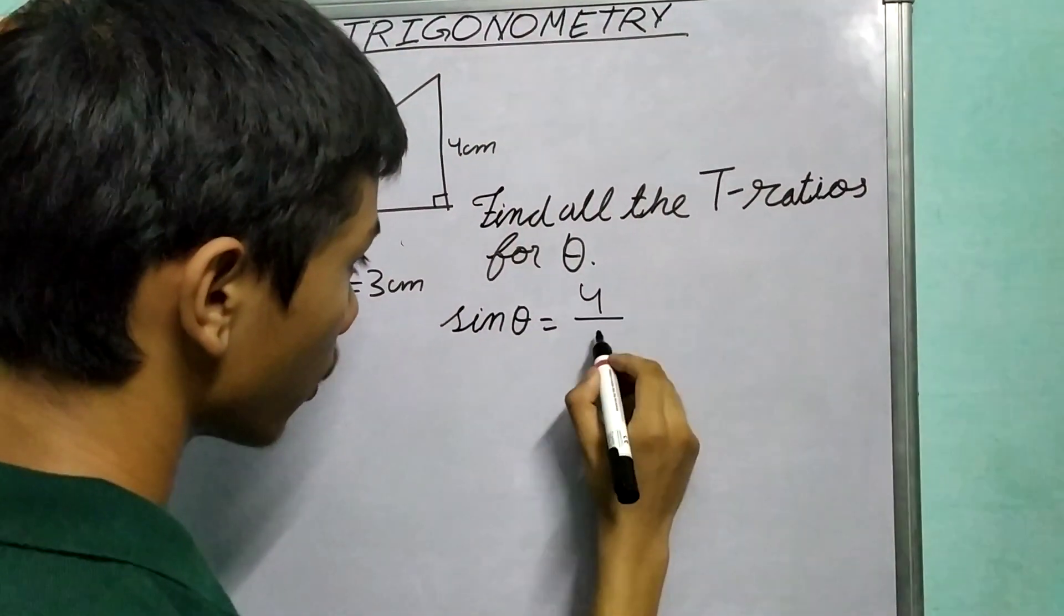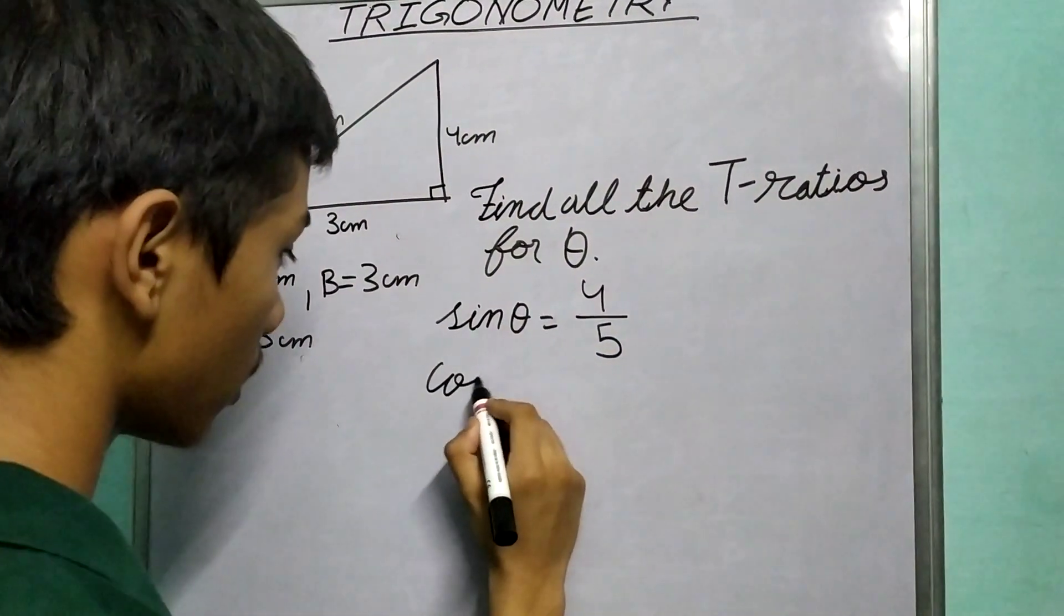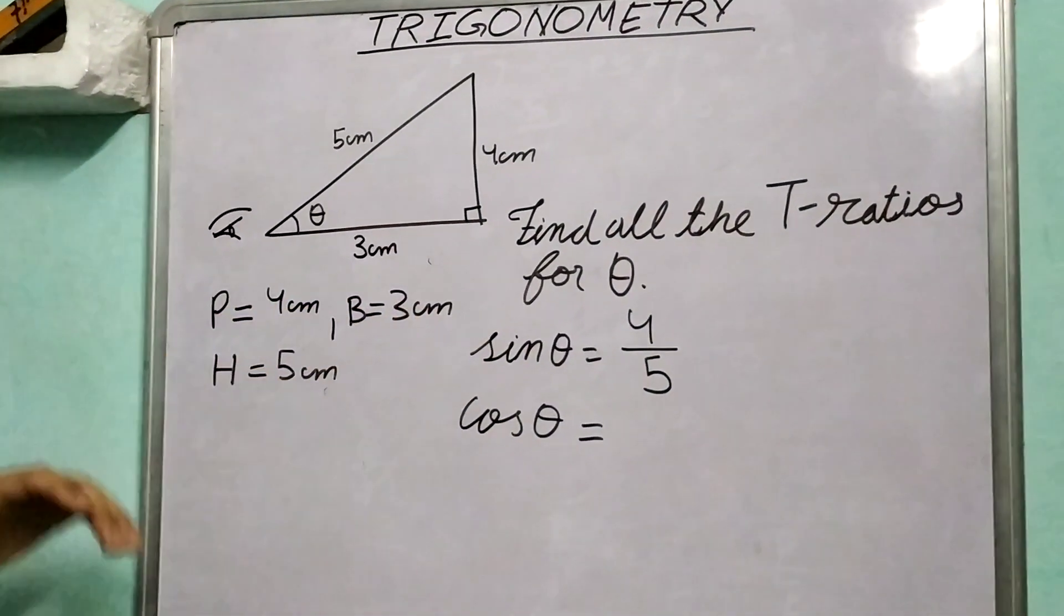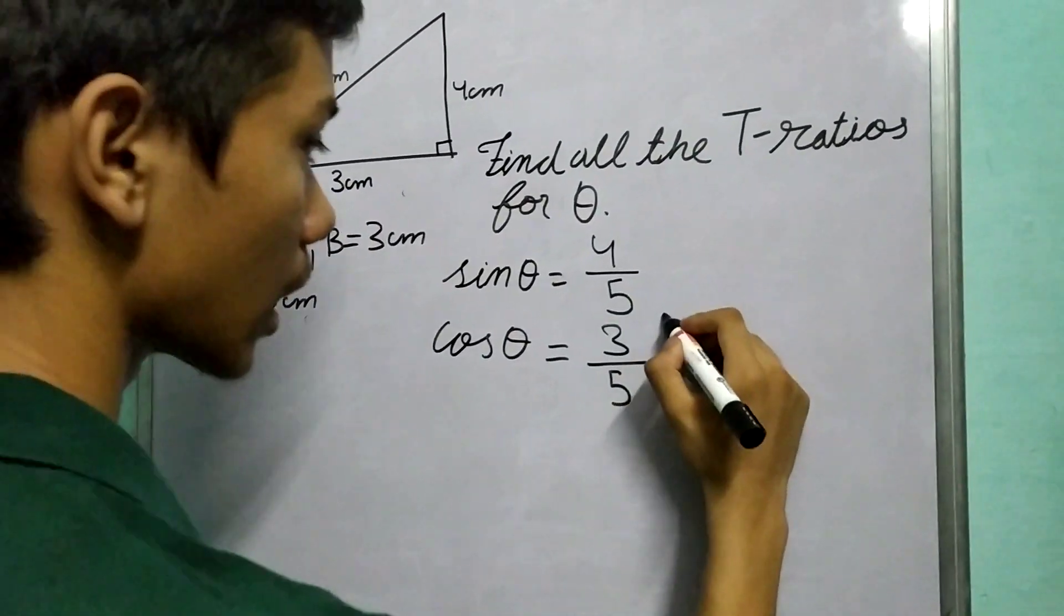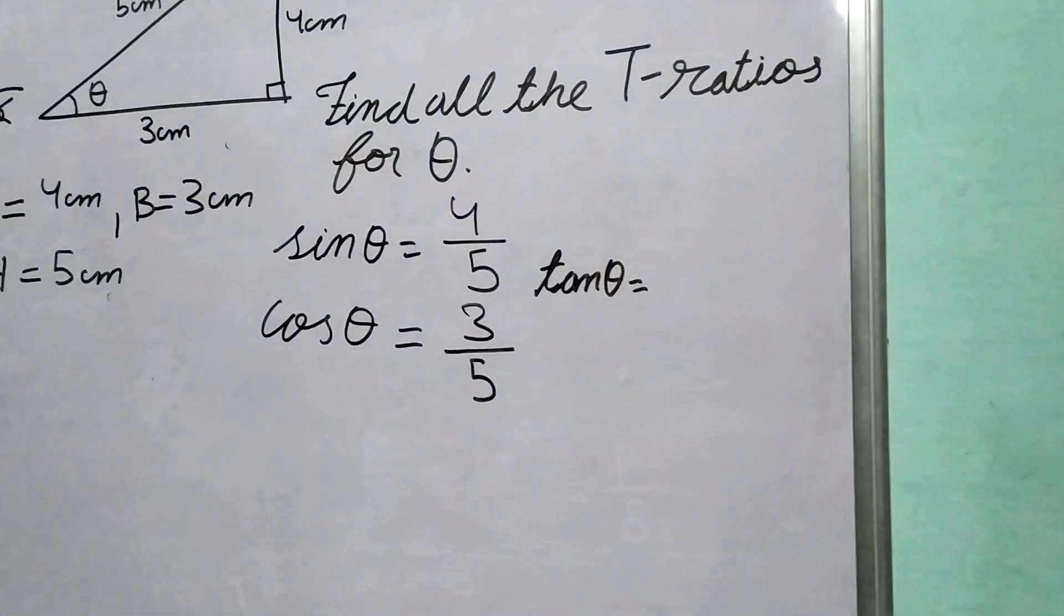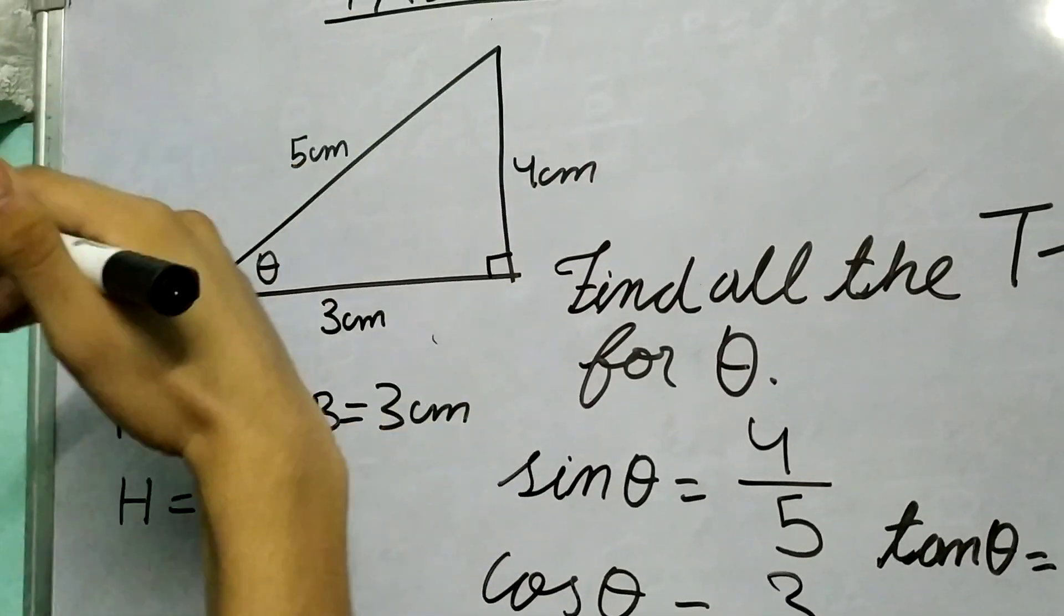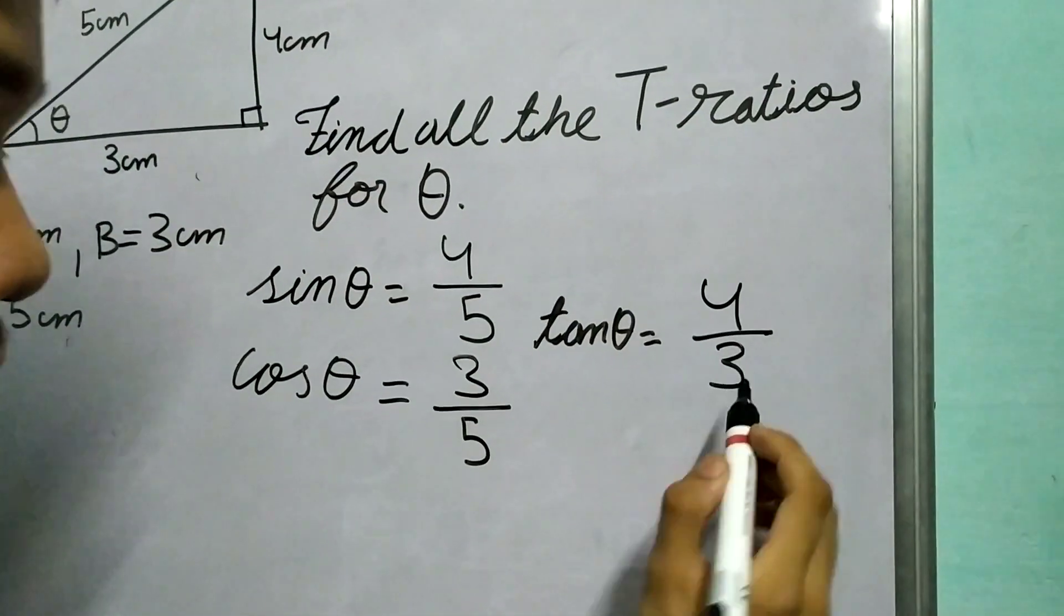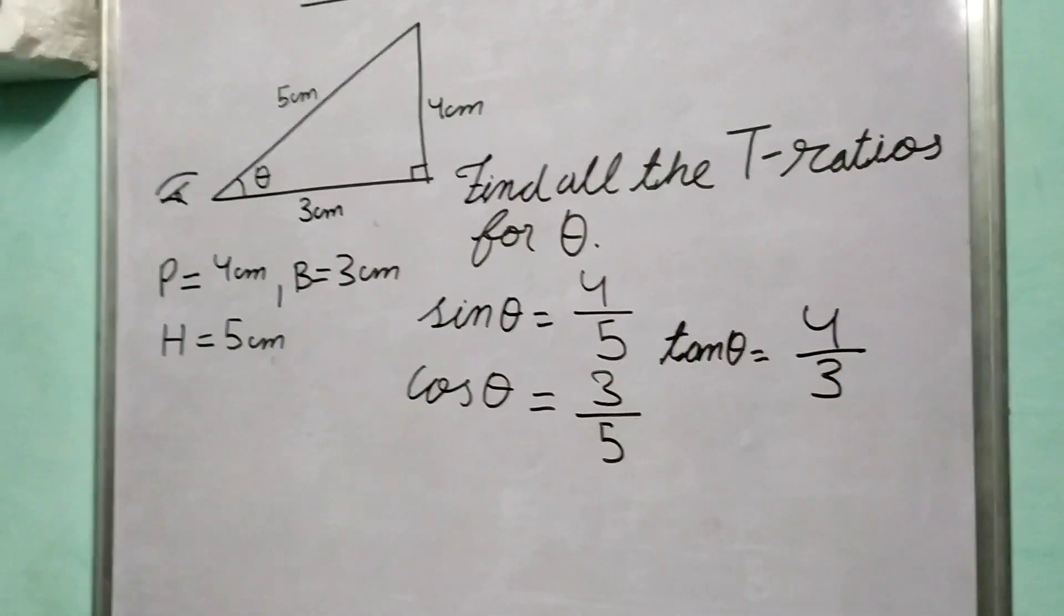And now we need to find all the trigonometric ratios. So sin theta is perpendicular upon hypotenuse, P over H, so we get it as 4 upon 5. We need to solve for cos theta. Cos theta is base upon hypotenuse, B over H, so 3 by 5. Now tan theta is perpendicular upon base, P upon B, so P upon B we get it as 4 by 3. Notice the centimeters cancel out eventually. These are ratios; the ratios don't have any units.